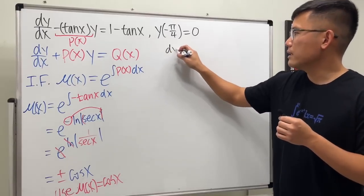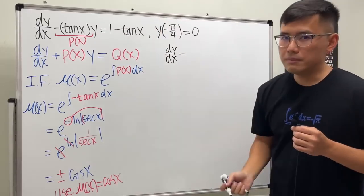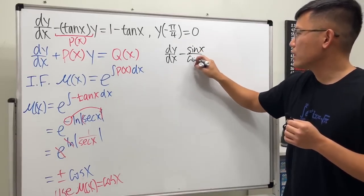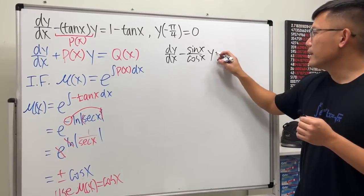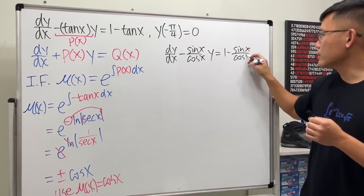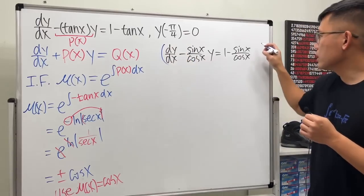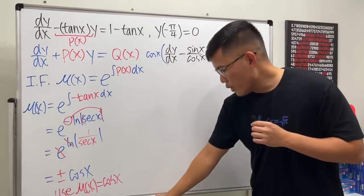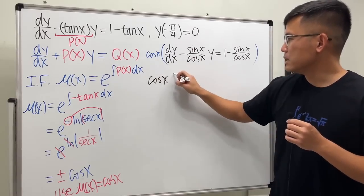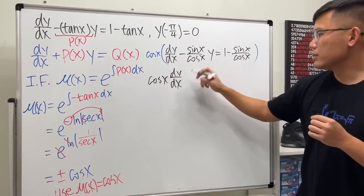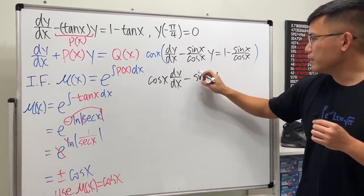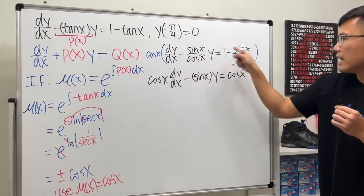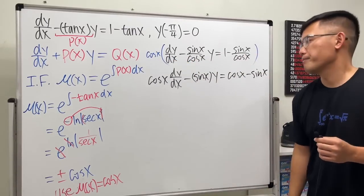Looking at the original differential equation, we multiply through by the integrating factor cosine x. Writing tangent as sine x over cosine x, the left-hand side becomes cosine x times dy/dx minus sine x times y. The right-hand side becomes cosine x minus sine x.